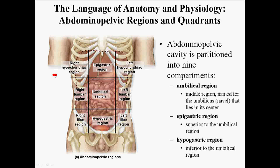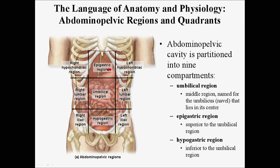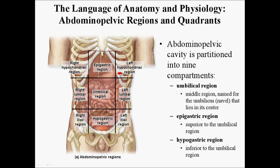The abdominal pelvic cavity is so large that it is partitioned into nine different compartments. Taking the center of this tic-tac-toe grid: the center region is the umbilical region, named directly for the navel. Beneath it, you have the hypogastric region — hypo meaning below, gastric meaning pertaining to the stomach, so it's below the stomach. Above is the epigastric region, with epi meaning on top or above. On the left and right sides, you will have the hypochondriac region, the lumbar region, and the iliac region.